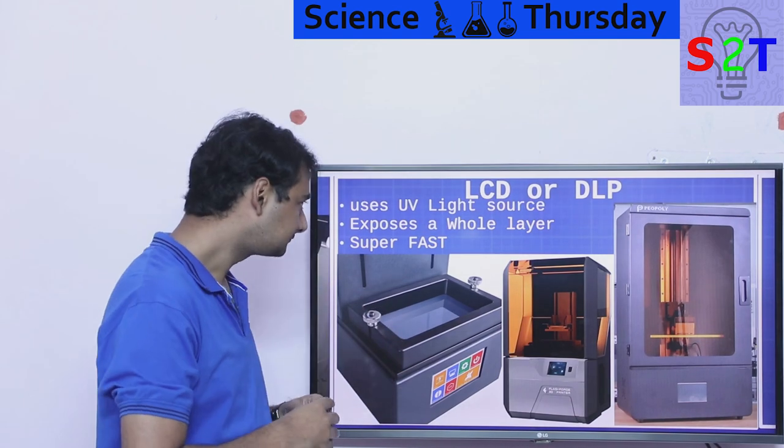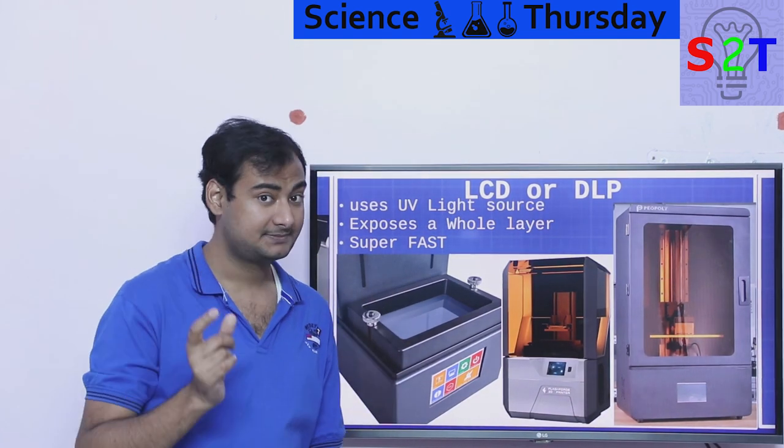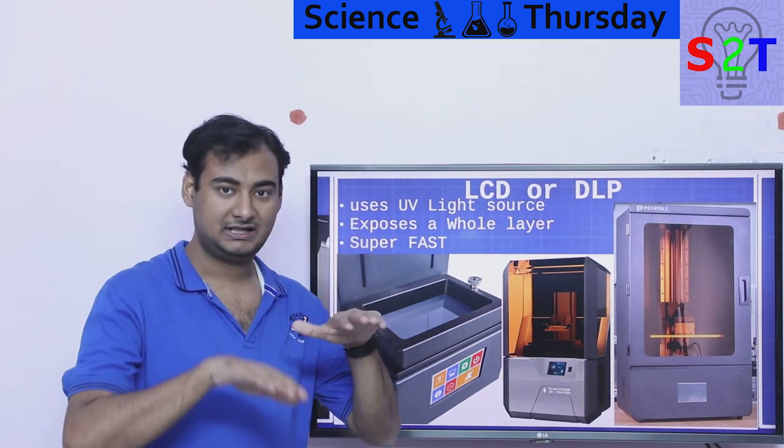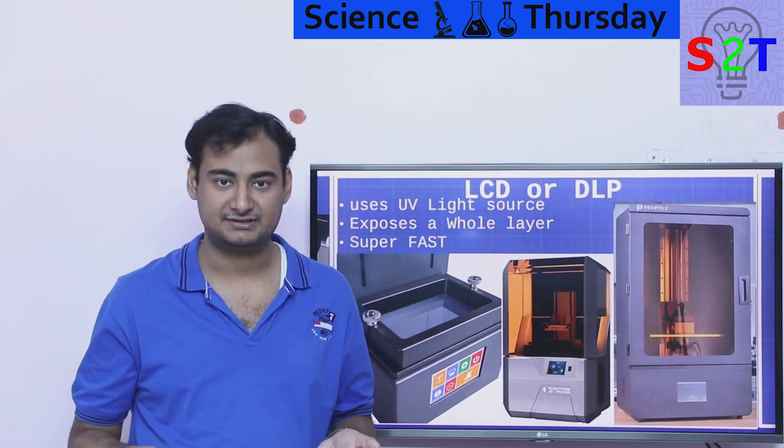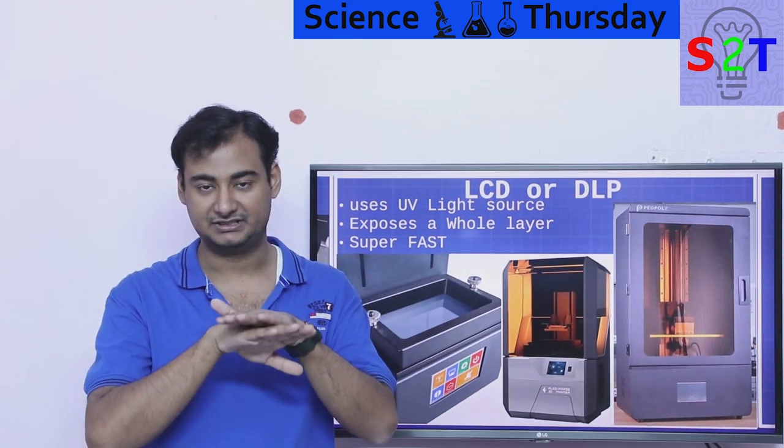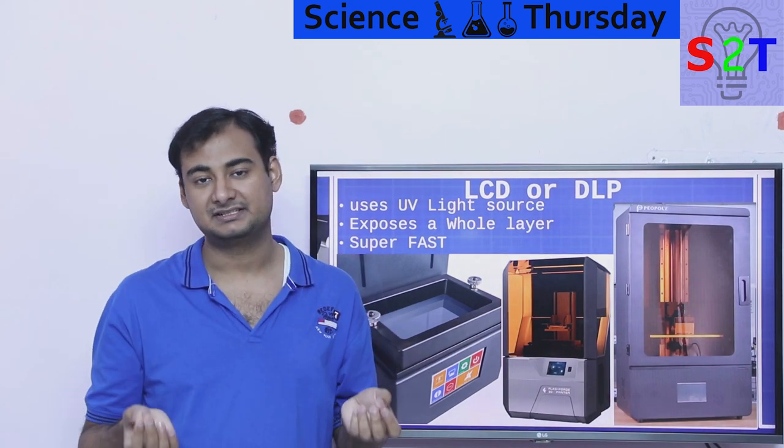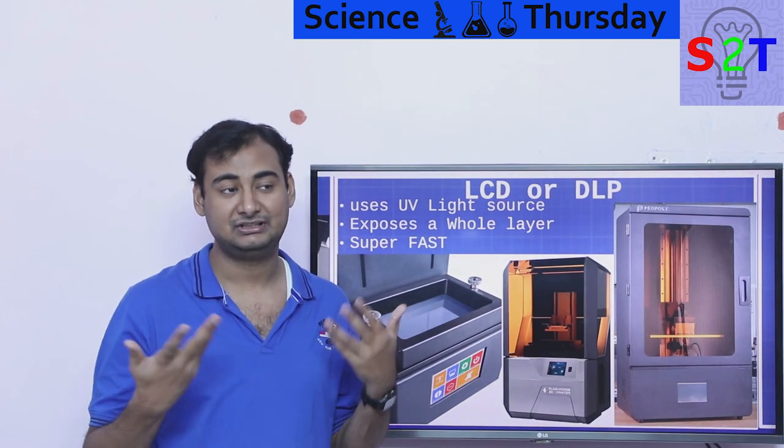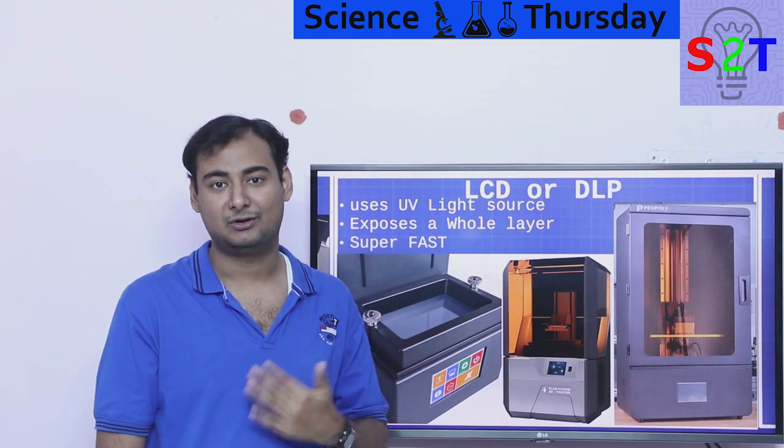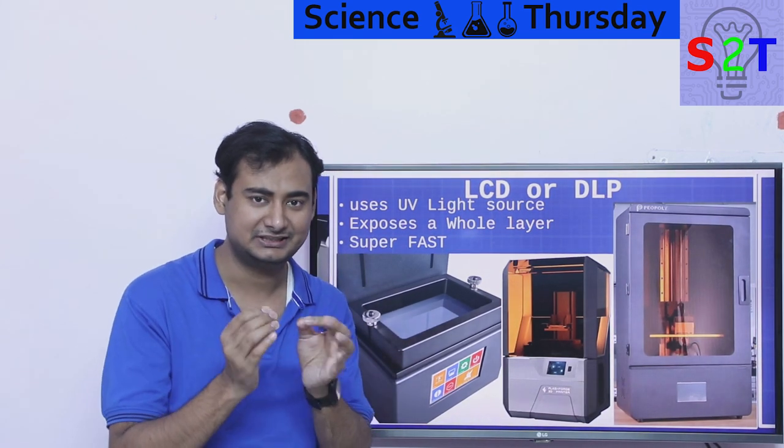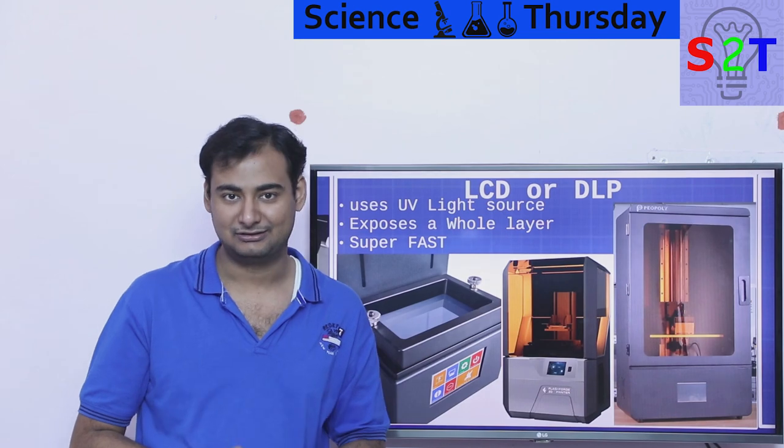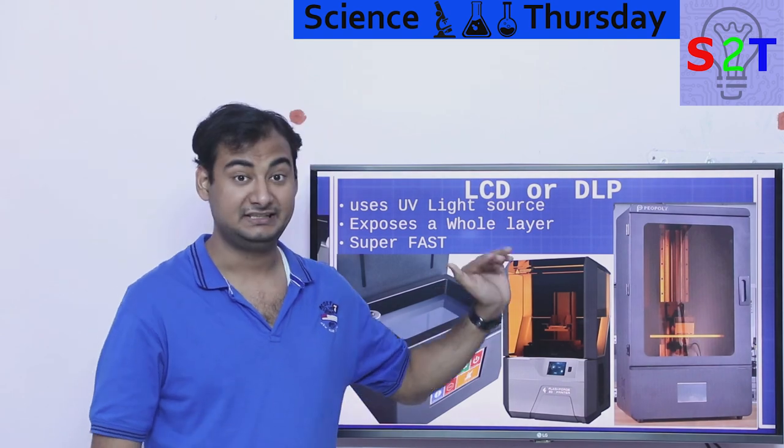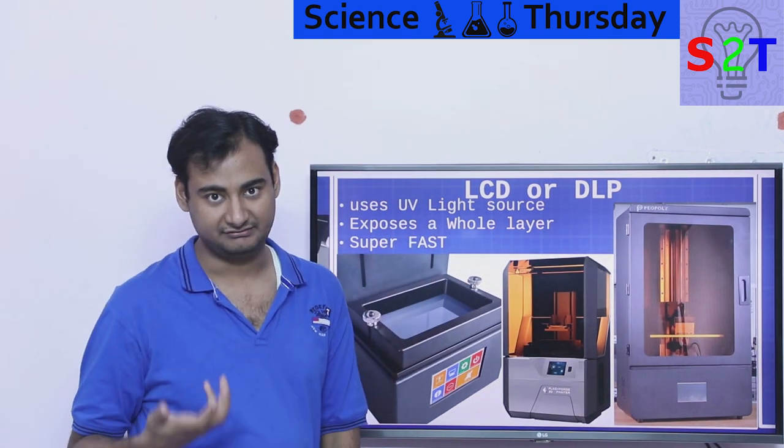DLP chips are very expensive, so somebody came up with the idea: why use DLP? Just use a 4K LCD. You'll have UV lights, then a diffuser, then an LCD. LCD is basically an on and off circuit that allows how much light needs to pass. Thankfully you don't need contrast in this scenario, you just need on and off. High resolution allows for precision.